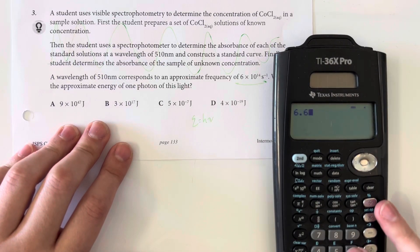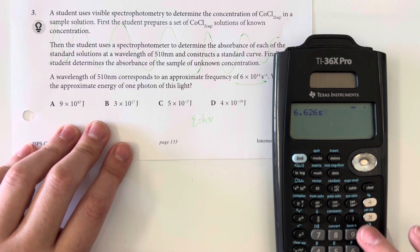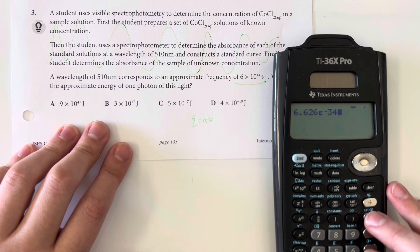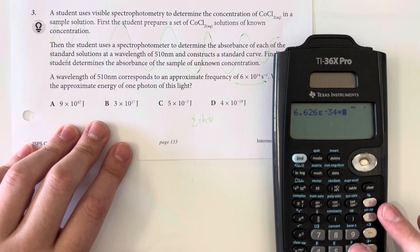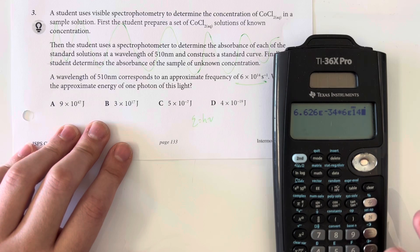So Planck's constant is 6.626 times 10 to the negative 34th. And I am multiplying that by my frequency of 6 times 10 to the 14th.